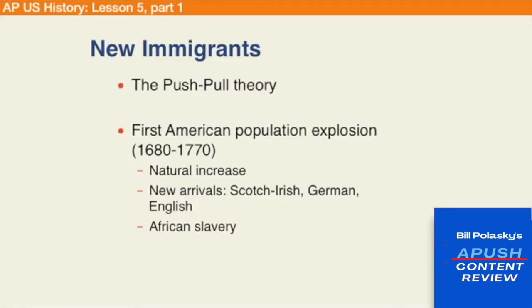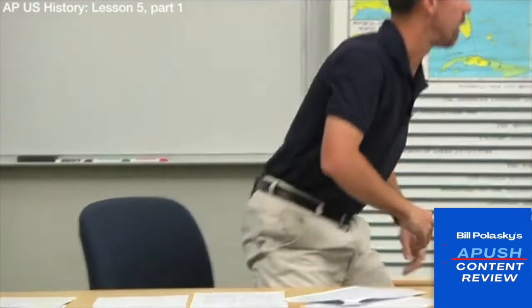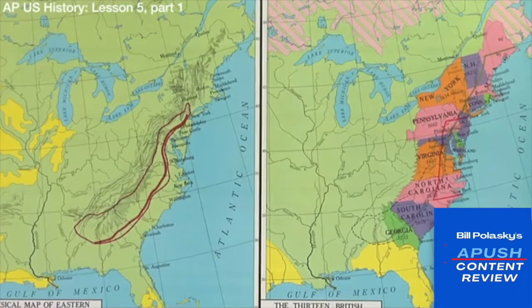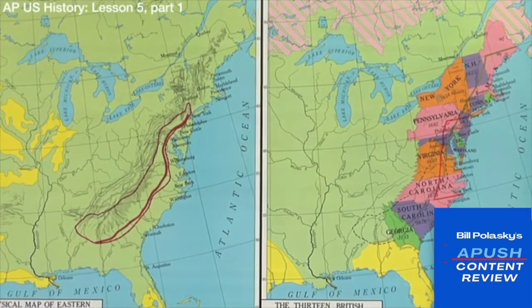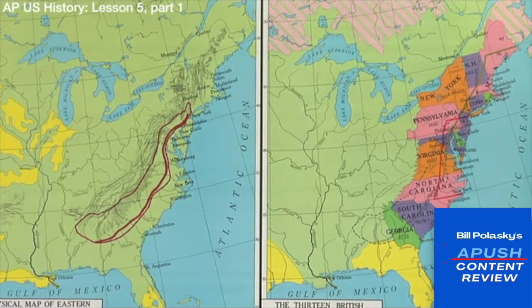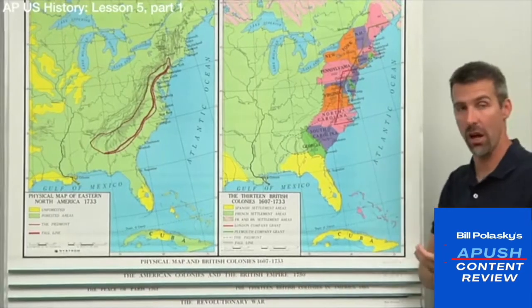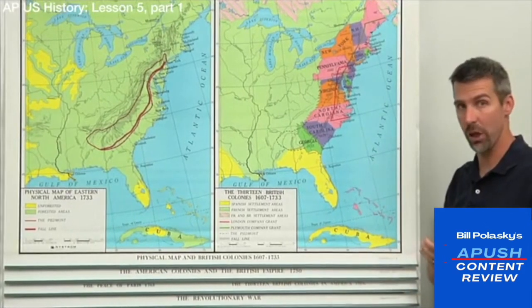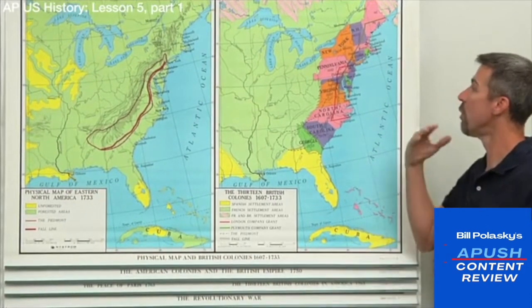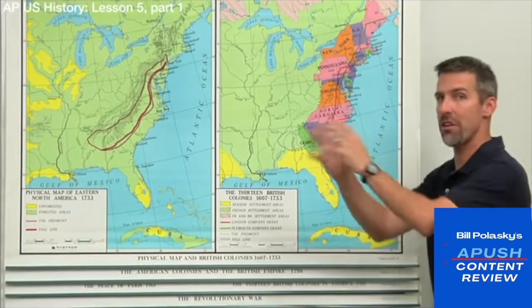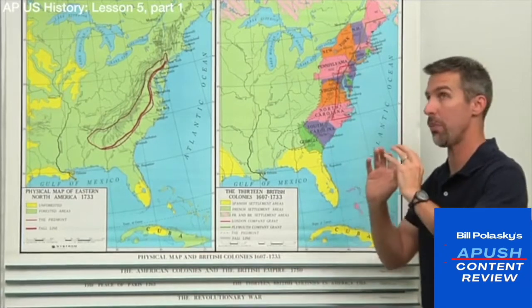The first American population explosion would be the century from about 1680 to 1770, with three main factors accounting for it. The first is natural increase. In earlier units, we discussed immigration to the new world as being like a conveyor belt — people from the old world were coming over and dying almost as quickly as they arrived, from disease, the traumas of the voyage, high infant mortality, etc. European nations were essentially shoveling people in to fill the space.